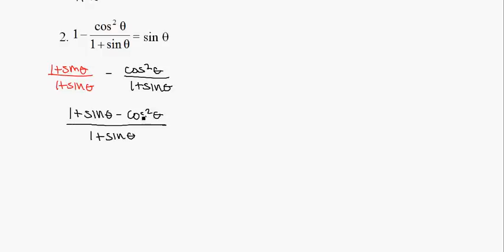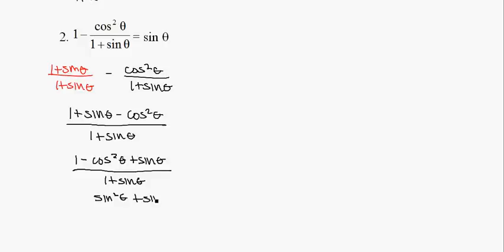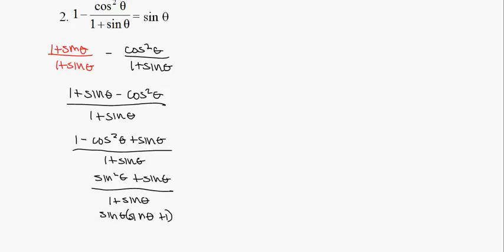This 1 and that cosine squared, I'm going to put those two together. So 1 minus cosine squared is sine squared theta, plus sine theta, all over (1 plus sine theta). If I factor out a sine theta from the numerator, I get sine theta times (sine theta plus 1), all over (1 plus sine theta). Those two cancel, so I'm just left with sine theta equals sine theta. I win.